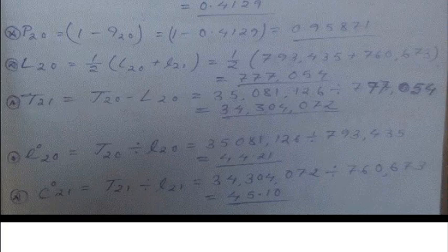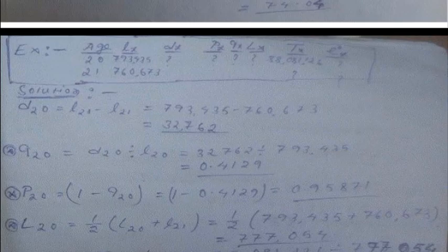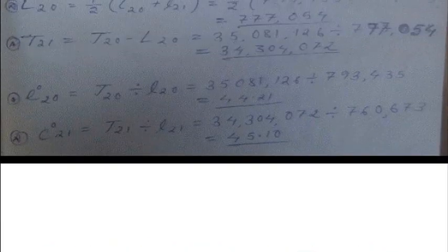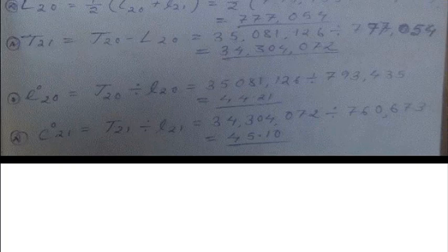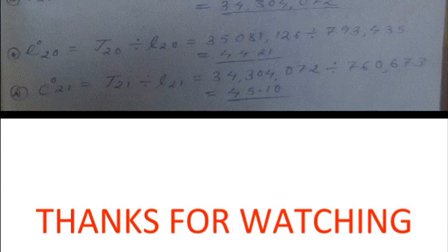For T21: the formula is T21 = T20 − L20. T20 is given as 38,081,26... and subtracting L20 gives T21. The average life expectancy e20 = T20 / l20 and e21 = T21 / l21. The results are e20 ≈ 44.21 and e21 ≈ 45.10.